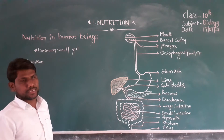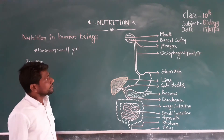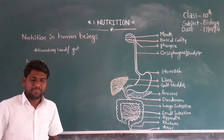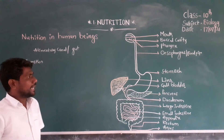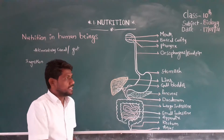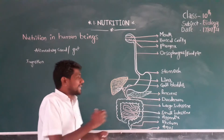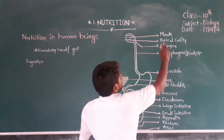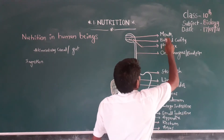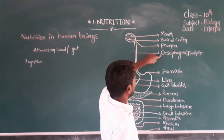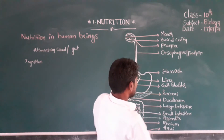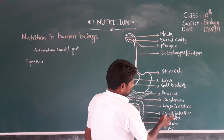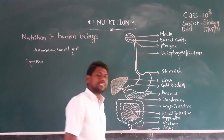Nutrition in amoeba and nutrition in Paramecium we already discussed in the previous class. Today we are going to discuss nutrition in human beings. In human beings the digestive system is complex in nature. In this digestive system various parts are there. These various parts together are called the alimentary canal or gut. In the alimentary canal, mainly nine parts are there: mouth, buccal cavity, pharynx, esophagus, stomach, large intestine, small intestine, rectum, and anus.